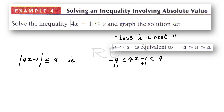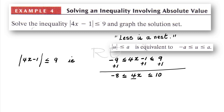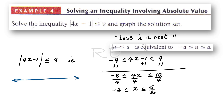We're going to add 1 to all three sides, giving us negative 8 less than or equal to 4x less than or equal to 10. In order to isolate x, we divide all three sides by 4. We obtain negative 2 less than or equal to x less than or equal to 5/2, after reducing 10 fourths.